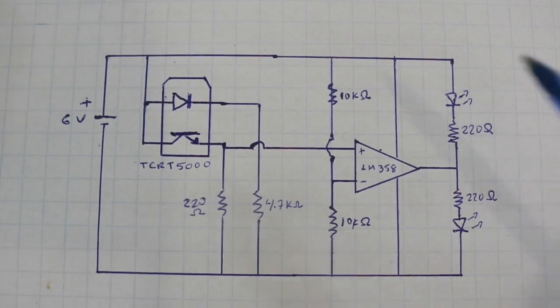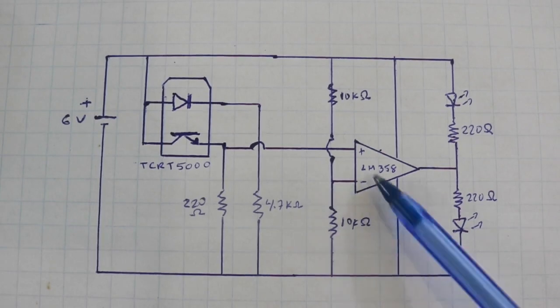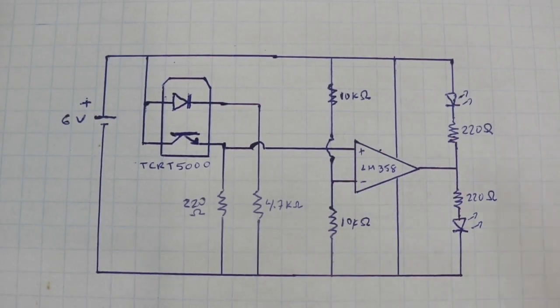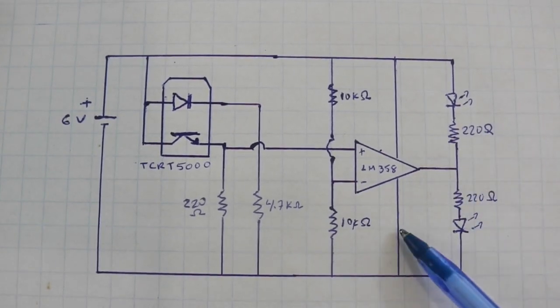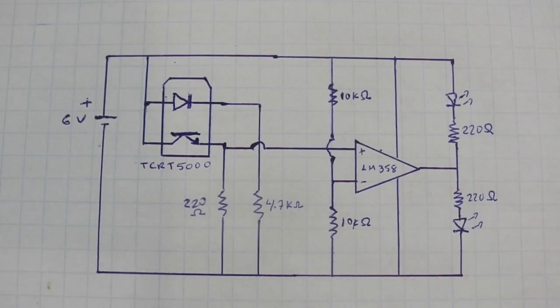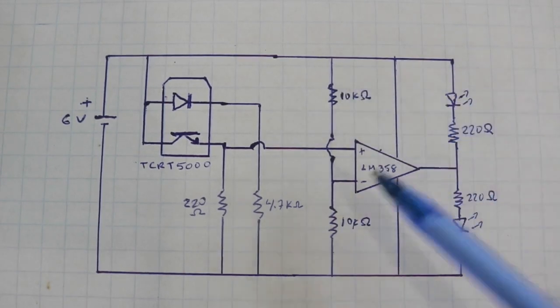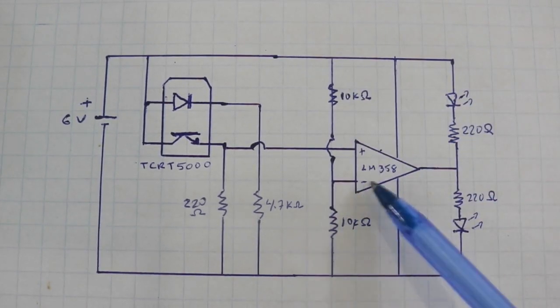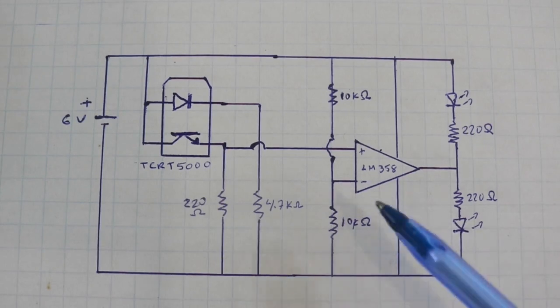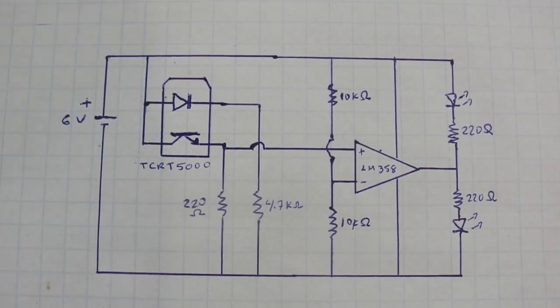Now, if the voltage of the non-inverting input is less than the voltage on the inverting input, at the output we will have this voltage which is ground, 0 volts. Here we have a voltage divider. Therefore, at the inverting input we will have 3 volts, half of the input voltage.